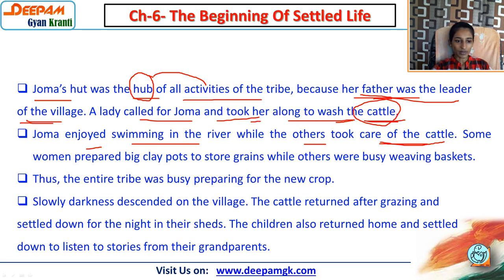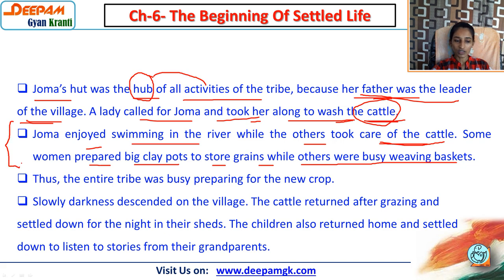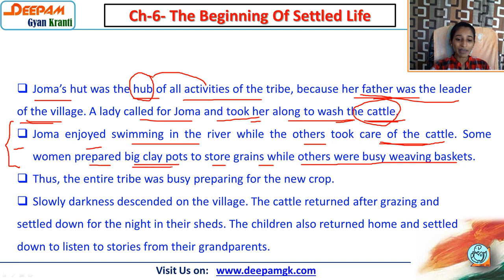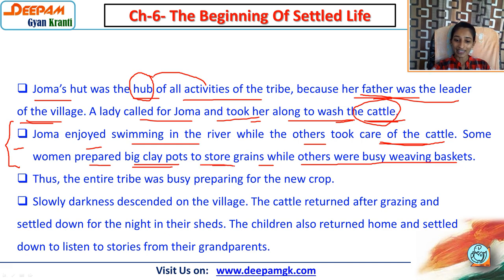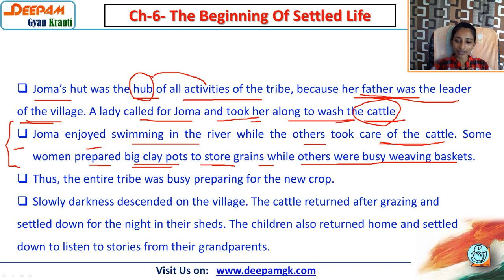Some women prepared big clay pots to store grains while others were busy weaving baskets. The big clay pots were made to store the grains from farming - crops would be cut and stored in these pots. Others were weaving baskets by hand.